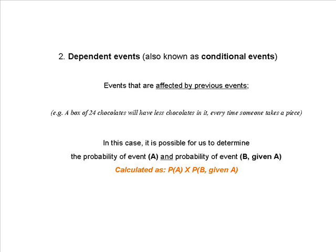Second, we have dependent events, also known as conditional events. Such events are affected by previous events. For example, if you have a box of 24 chocolates and share it with friends, each time a friend takes a chocolate out you will have less chocolates in the box. Where you have 2 dependent events, it will be possible to determine the probability of event A and the probability of event B given A.